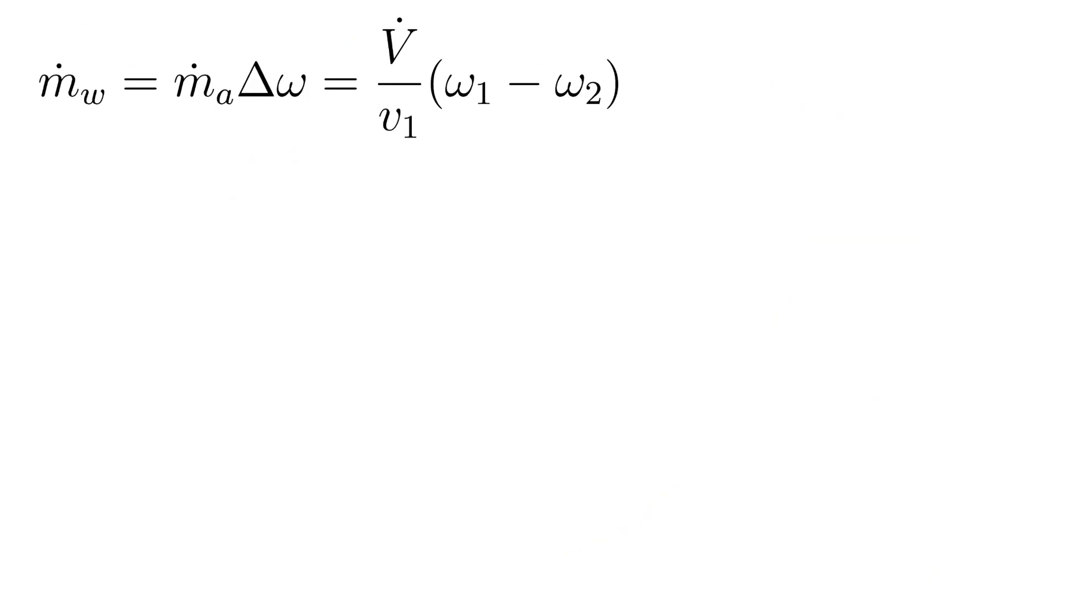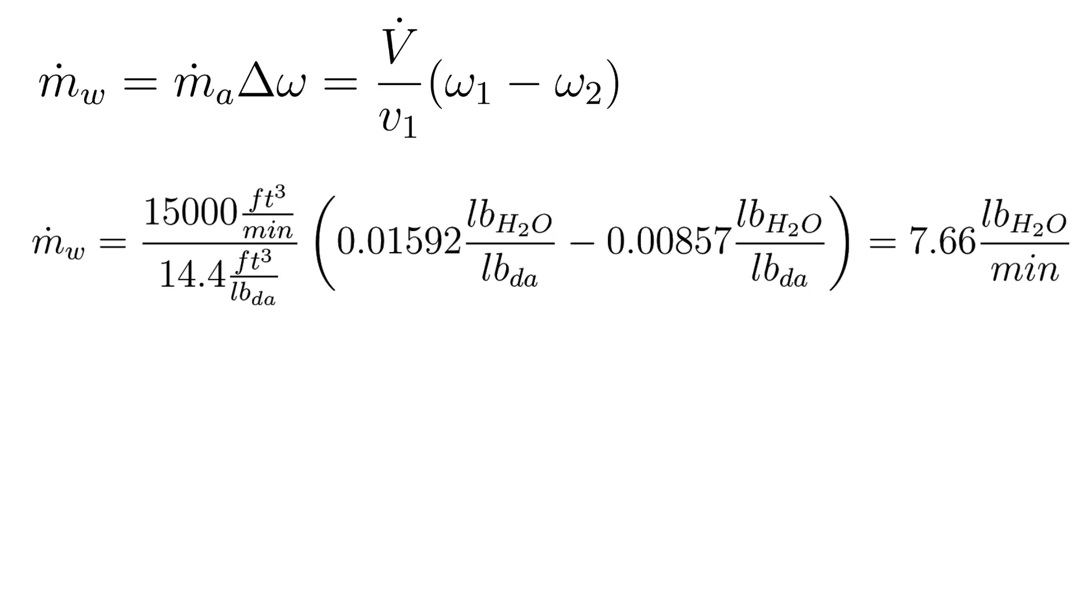Here's our equation again for finding the mass flow rate of condensate. Now let's plug in the volume flow rate, 15,000 CFM, the specific volume, 14.4 cubic feet per pound of dry air. The humidity ratio for each state as shown, and we can cross out the units, we'll be left with pounds of water per minute, and the answer is 7.66.